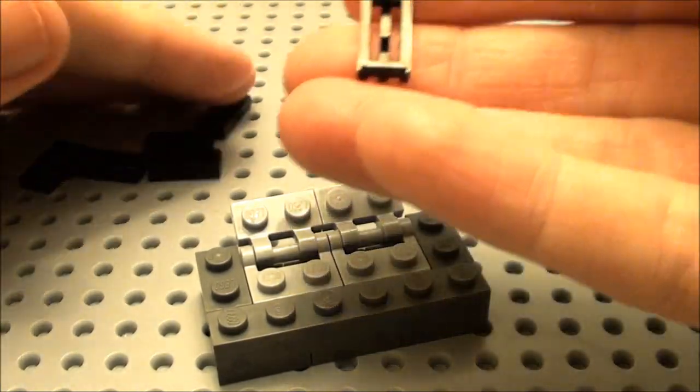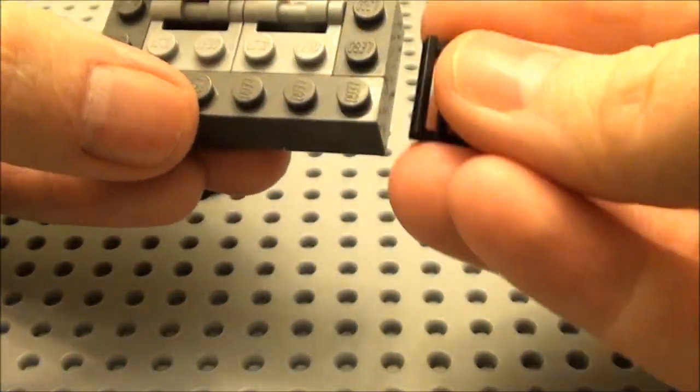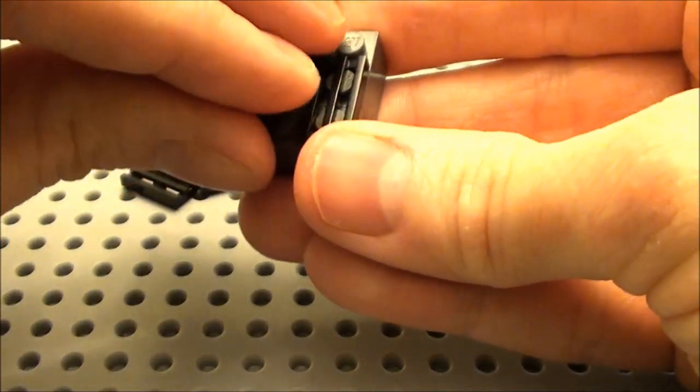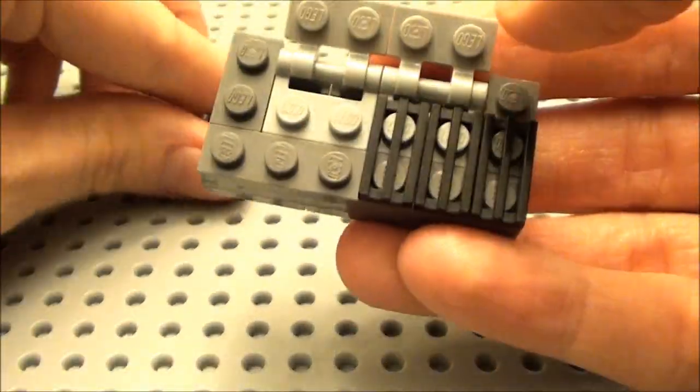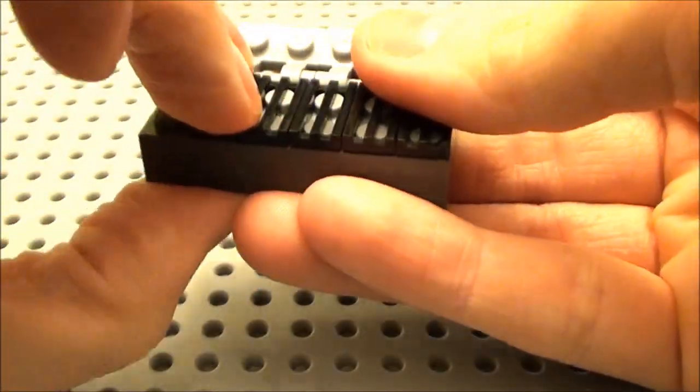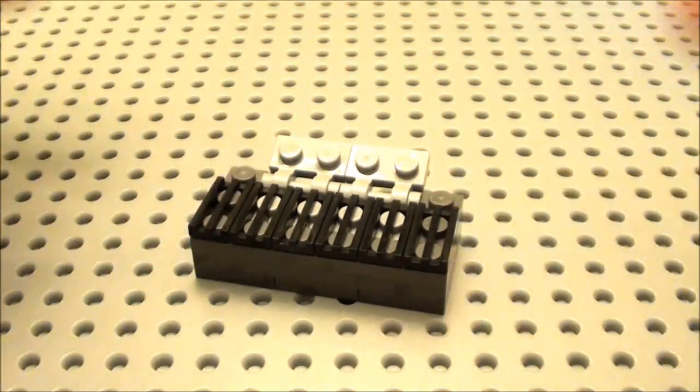So we're going to take six of these black grates. You can place them any way you want. I'm going to place them vertically side by side. And this will be the grill of our barbecue. There you have it. There's the body of our grill.